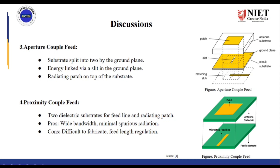The non-contact techniques include Aperture Coupled Feed and Proximity Coupled Feed. In Aperture Coupled Feed, there are different substrates split into two by the ground plane, with a slot through which electromagnetic waves from the feed can reach up to the top of the patch. In Proximity Coupled Feed, there are two dielectric substrates for the feed line and radiating patch. The advantage is wide bandwidth, but the limitation is that it is difficult to fabricate and the length of the feed must be regulated.